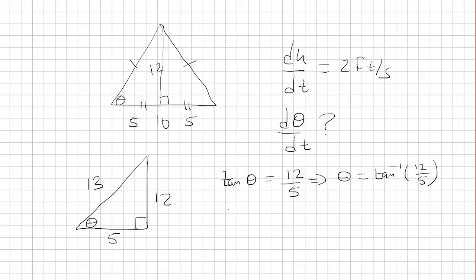So first, we know that tangent of theta is equal to the height over the base. So the height is h, base is 5. So now we're going to take the derivative of both sides.